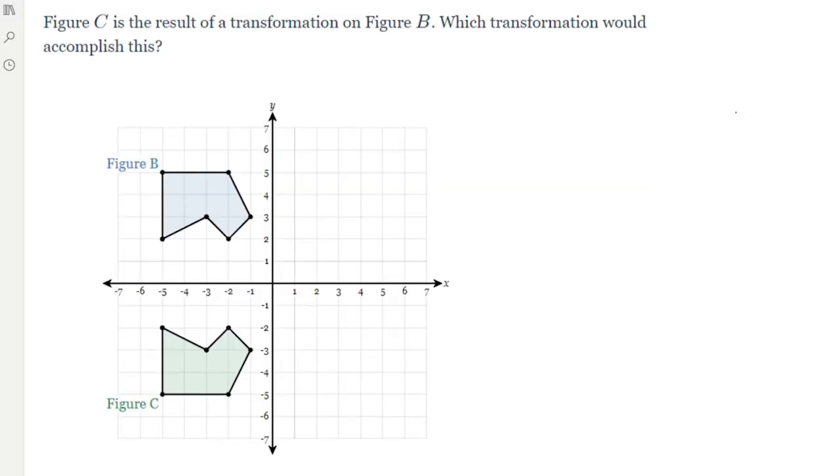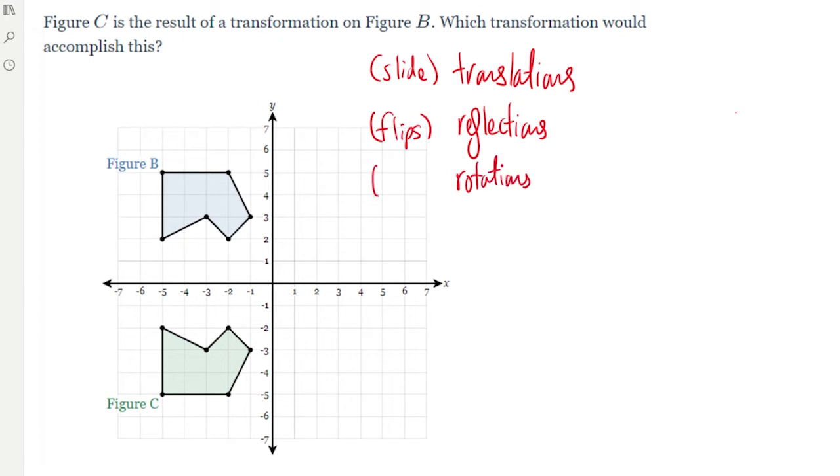Here are the three rigid motions that we've learned. We learned about translations, which is a slide, reflections, which are flips, and rotations, which are turns.